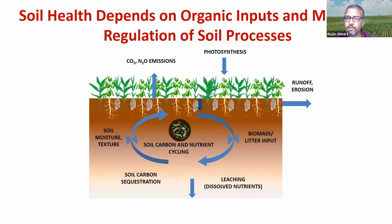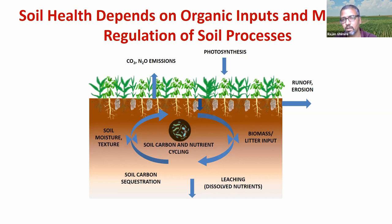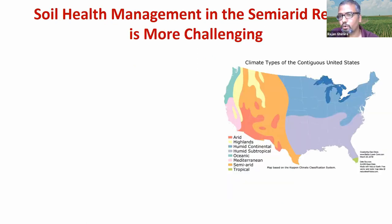It's important to understand how inputs from our crop and cover crop go into the system — and how part of those resources are lost through runoff, erosion, leaching, or go into the atmosphere as gas. If we have that knowledge, it will help us better manage the entire system and our management practices.